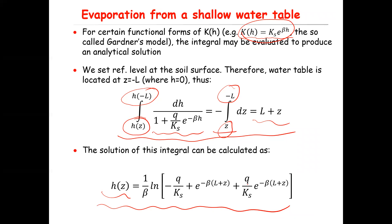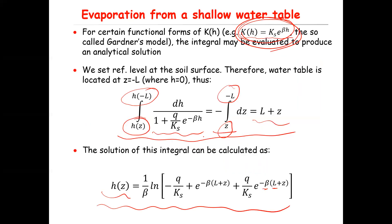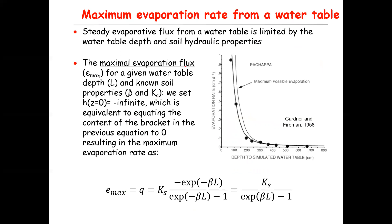As you can see, the flux Q is limited by the depth of the water table L and the soil property reflected in parameter beta. The question asks for the maximum evaporation flux. The maximum occurs when the matric potential at the surface goes to minus infinity, because at the water table the matric potential is zero—so having minus infinity at the surface provides the maximum evaporative flux. This happens only when the expression in brackets equals zero, because L divided by zero gives minus infinity.